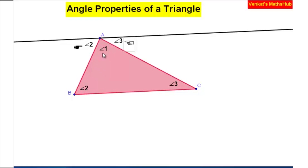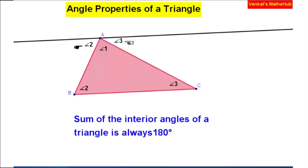Now, angle two, angle one, and angle three are all lying on the same line, so the total of the three angles equals exactly 180. Therefore, angle one plus angle two plus angle three equals 180 degrees. The sum of the interior angles of a triangle is always 180.